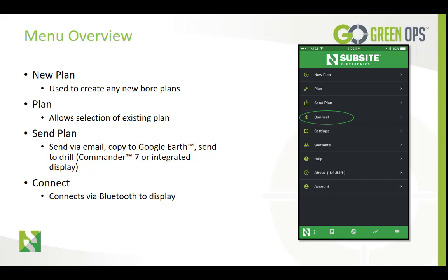The Connect menu item enables you to connect to the Commander 7 display on the drill so that plans can be uploaded and jobs can be downloaded. The connection process will be different depending on the mobile device you are using. If using an iOS device — iPhone or iPad — you must make your Bluetooth connection through the settings menu on your device, then connect using the display on this menu. If using an Android device, the connection is made from this menu.